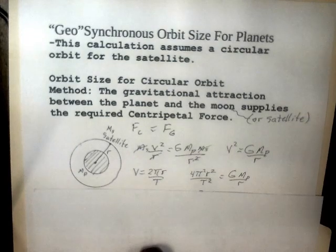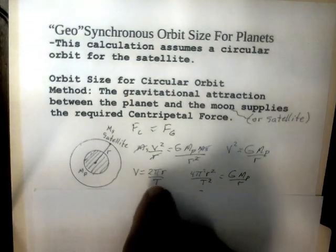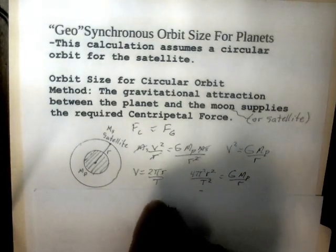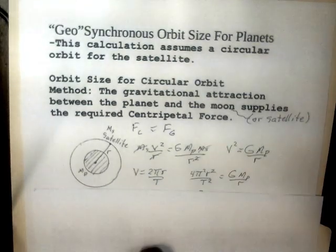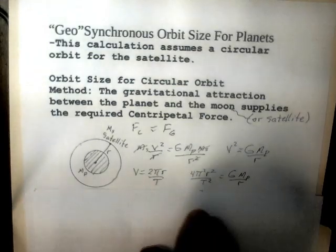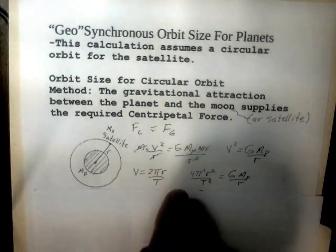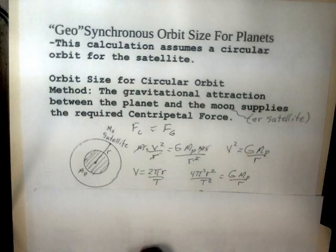That leaves us with v squared equals capital G mass of the planet divided by r. We can substitute out the v by using the fact that the circumference of the circle, 2 pi r, divided by the orbit period provides the velocity of the satellite in meters per second.